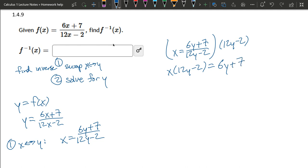Now we're going to distribute x here. 12xy minus 2x equals 6y plus 7.